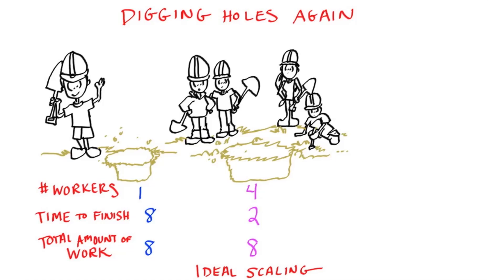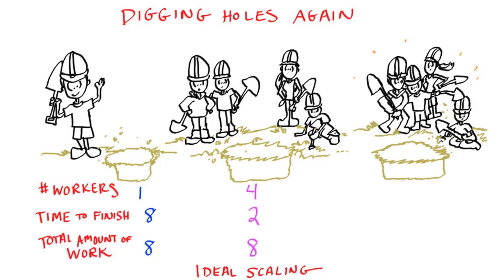Alternatively, we might have four diggers each of which gets in each other's way, so we're not going to be quite as efficient. For instance, we might have four workers, and together it's going to take them four hours to finish, meaning that together they've done 16 hours of work.